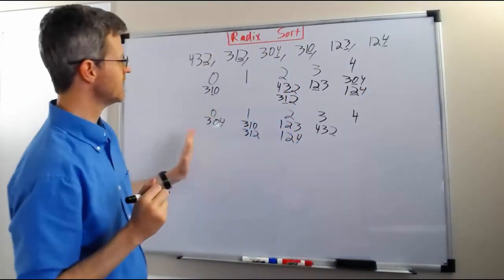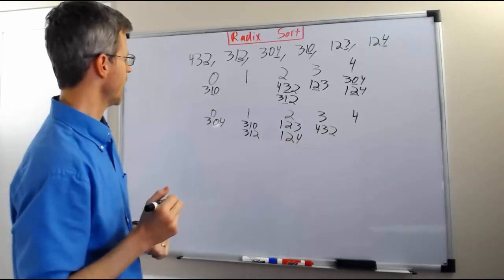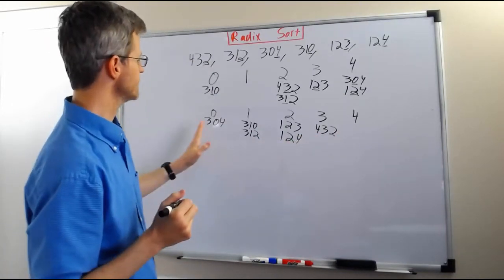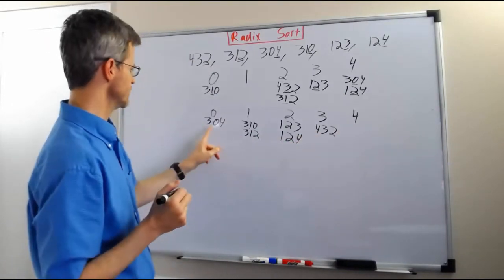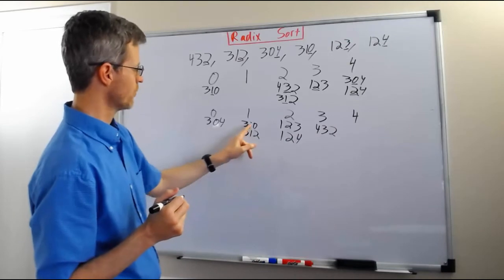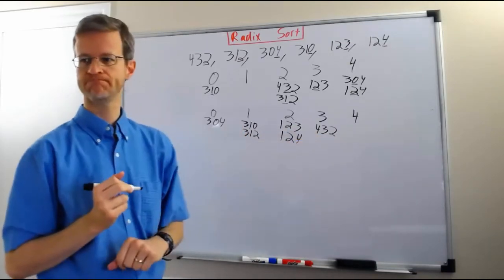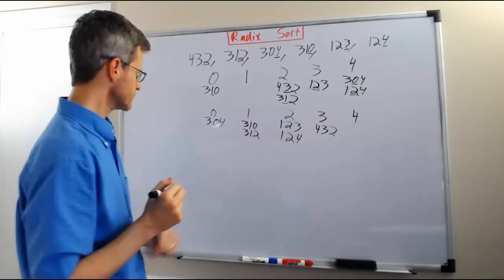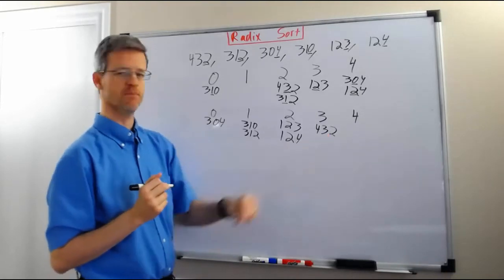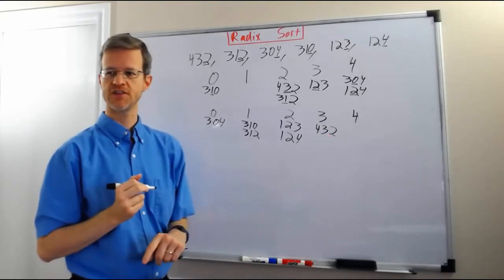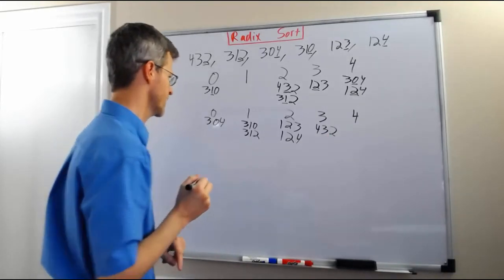We can see that these numbers are now sorted by their last two digits: 04, 10, 12, 23, 24, 32. What remains is to sort them by their first digit — the most significant digit.